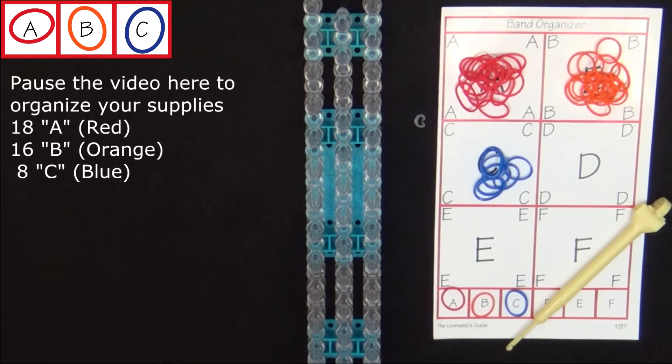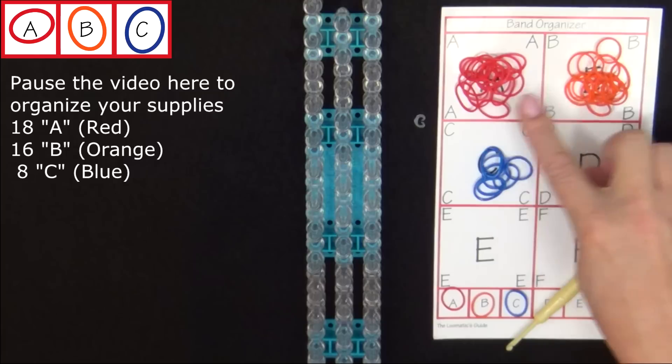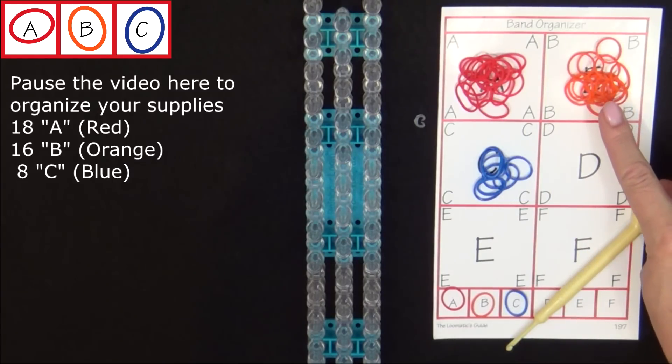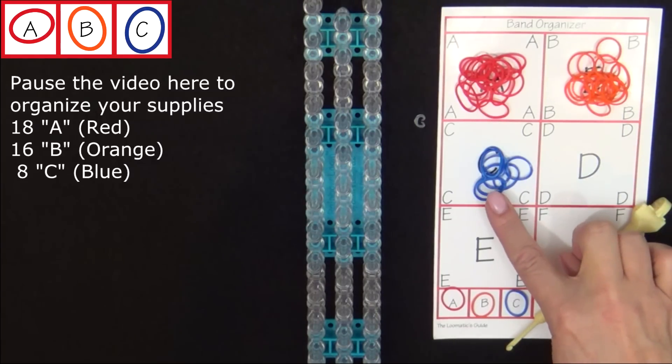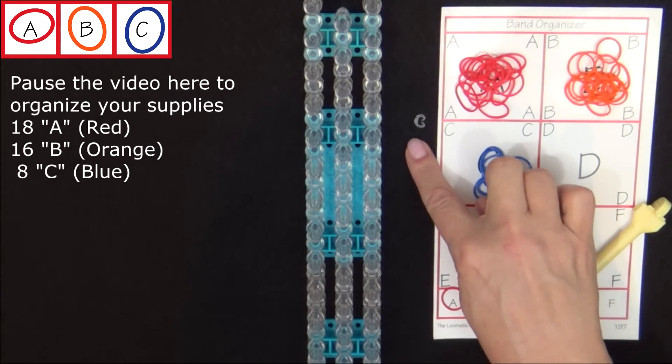To make this bracelet you will need 18 A colored bands, 16 B colored bands, 8 C colored bands, and a C-clip.